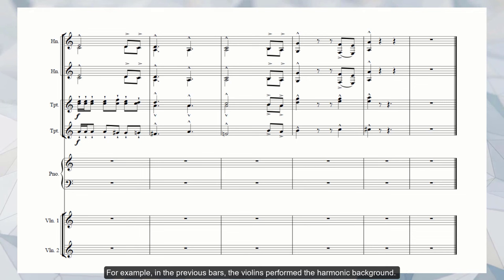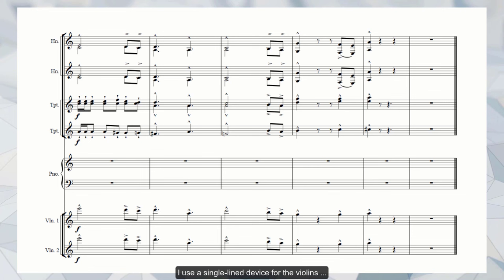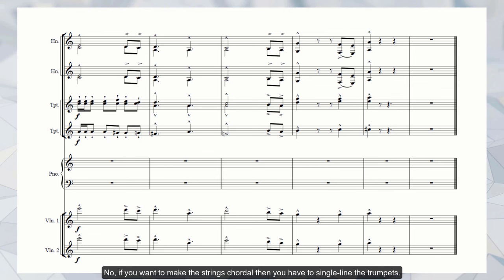For example, in the previous bars, the violins performed the harmonic background. Let's have them play a melody. By doing this, we also reduce the weight of the harmonic background. Because the melody itself is already filled with chordal tones, refilling that register with arpeggio-like harmony will reduce the brightness of the melody. Thus, the first and second violins take the melody an octave above the trumpets. I use a single line device for the violins since it will be nonsensical to fill all registers with chordal melodies. Now, if you want to make the strings chordal, then you have to single line the trumpets. This kind of approach can be considered the most appropriate option for film scores.